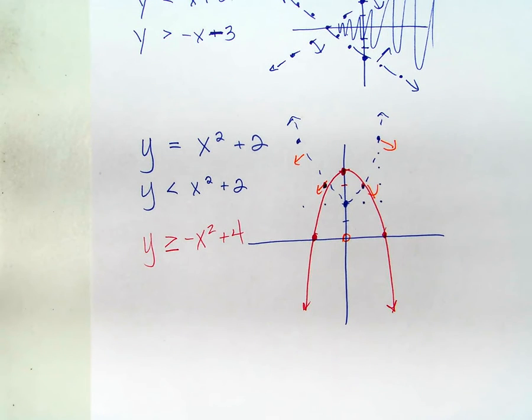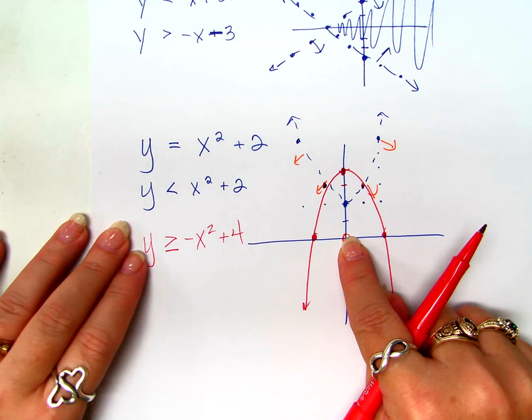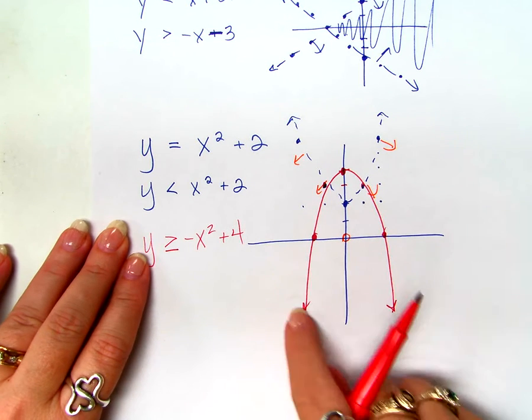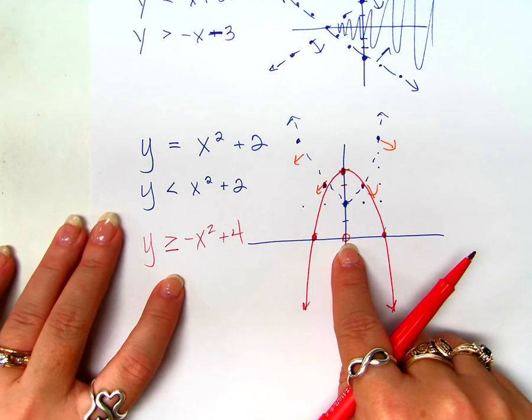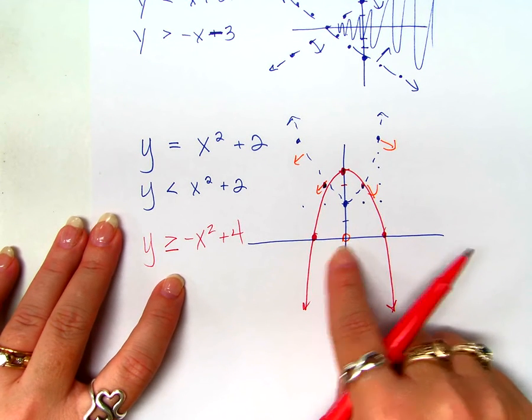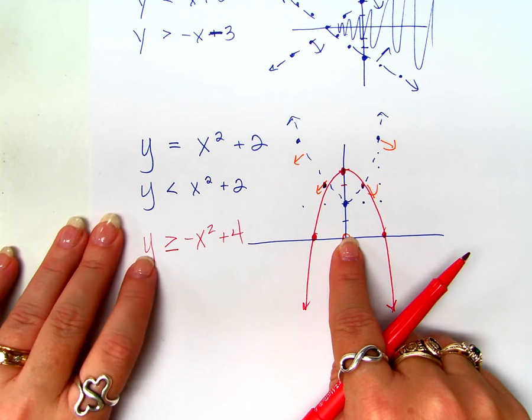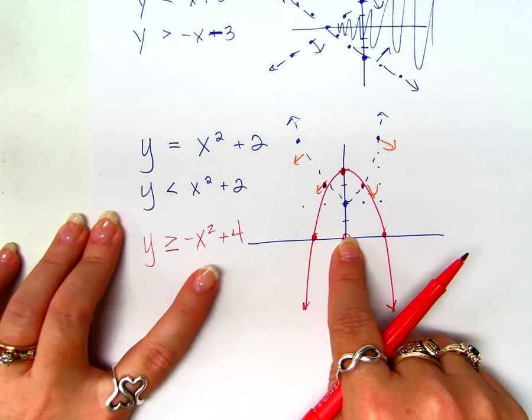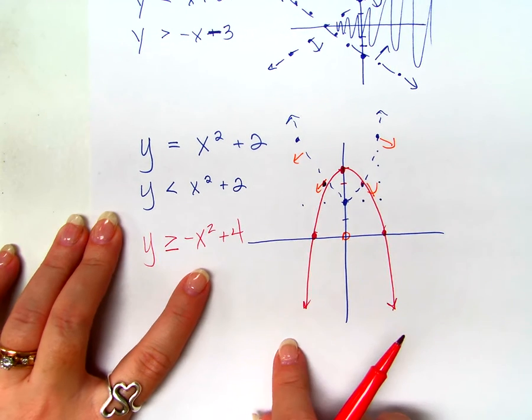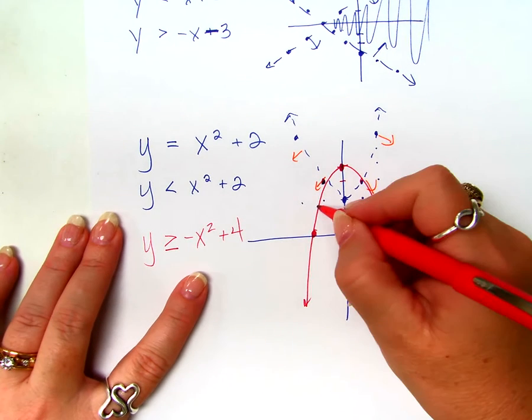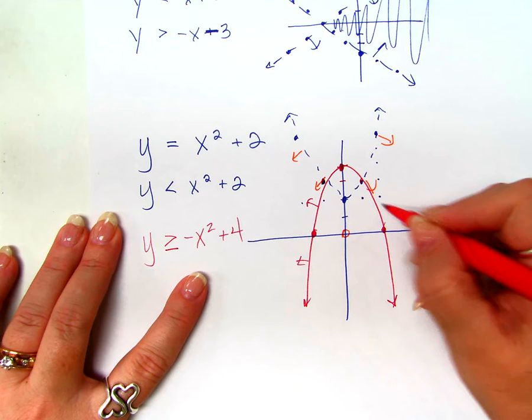Where would I shade here? Well, let's use the origin. Let's use the origin because it doesn't go through the origin. But, in this particular red parabola, where is the origin in relation to it? Zero, zero. It's on the inside, isn't it? Yeah. So, if I choose zero, zero, I get zero is greater than four. Is zero greater than four? No. So, in this particular parabola, I have to shade on the outside of it.